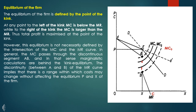From the equilibrium output, we draw a line up to the demand curve, then across to the Y axis to read off the price level. The price level remains the same even as costs change within the discontinuous range. This demonstrates price rigidity in the kinked demand model.